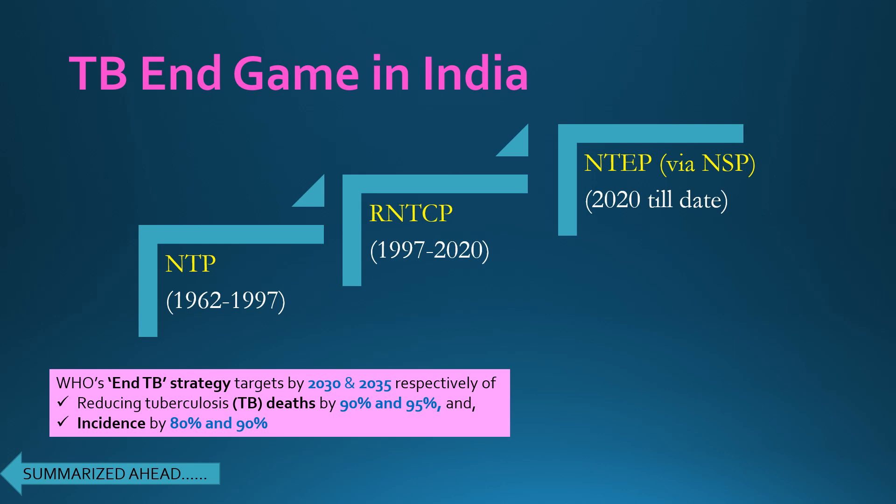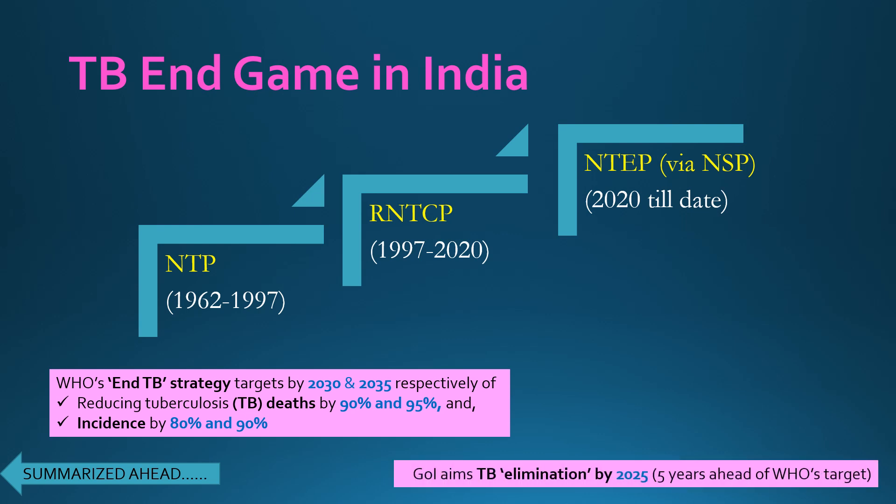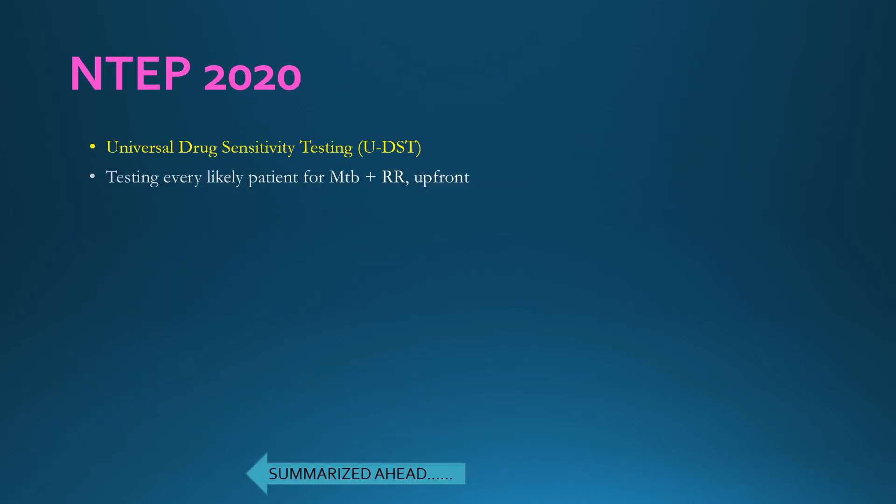The WHO has an End TB Strategy which targets reducing TB deaths by 90% and 95% by the years 2030 and 2035 respectively globally in all age groups, and reducing incidence of TB by 80% and 90% by 2030 and 2035 respectively. The Government of India aims at TB elimination by the year 2025 itself, five years ahead of the WHO's target.